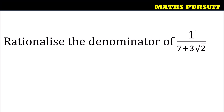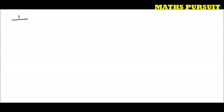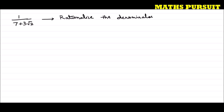So guys, let us see how we can solve this one. The question has given us this expression: 1 upon 7 plus 3 root 2, and the question is asking us to rationalize the denominator of the given expression.